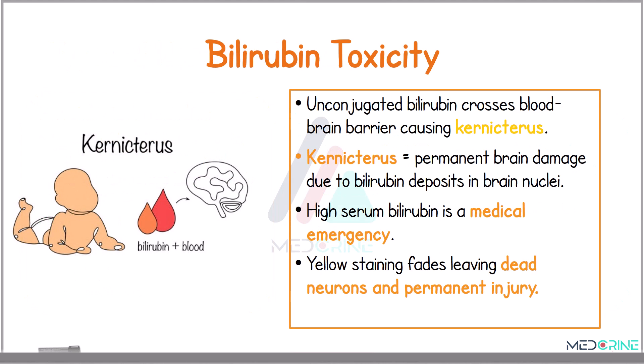With excessive accumulation of bilirubin, there is a higher chance of developing bilirubin toxicity. Unconjugated bilirubin crosses the blood-brain barrier, causing what is known as kernicterus, where there is permanent brain damage due to bilirubin deposits in the brain nuclei. High serum bilirubin is a medical emergency — this yellow staining of the brain fades away, leaving dead neurons and permanent brain injury.